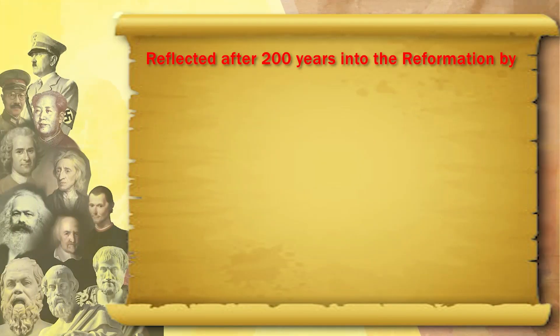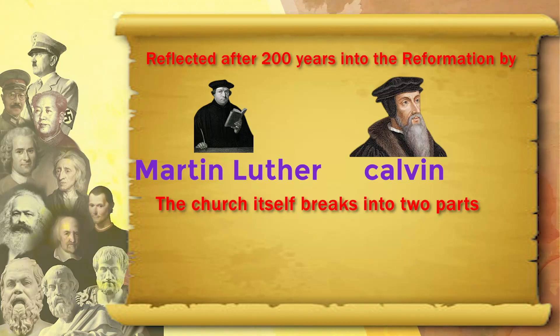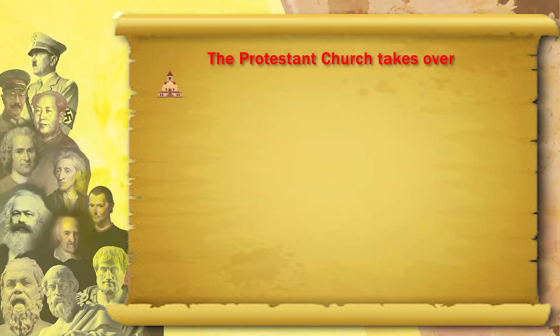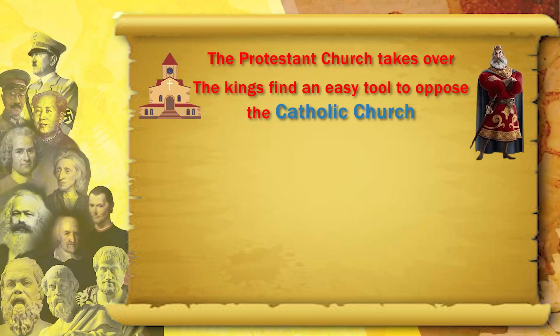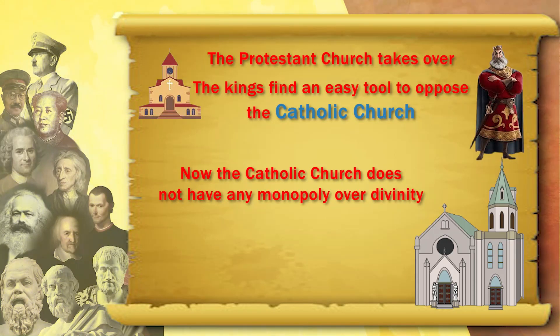This reflects, after 200 years, into the Reformation of Martin Luther and Calvin, when the church itself breaks into two parts: one part becomes Protestant and the other remains Catholic. When the Protestant church takes over, the kings find a very easy tool to oppose the Catholic Church and the Pope in Vatican. The Catholic Pope had previously held a monopoly over divinity, but now the Protestant Church has it too.